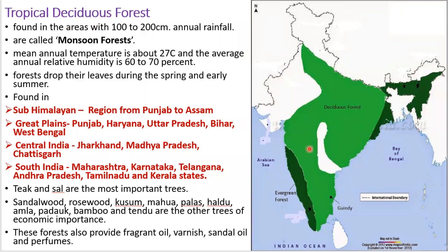Now let us see about tropical deciduous forests, which are also called monsoon forests. They are found in areas with 100 to 200 centimeters of annual rainfall. The mean annual temperature is about 27 degrees Celsius and the annual relative humidity is 60 to 70 percent. The trees in these forests drop their leaves during spring and early summer. They are found in the sub-Himalayan region from Punjab to Assam, the great plains of Punjab, Haryana, Uttar Pradesh, Bihar, West Bengal, and Central India.